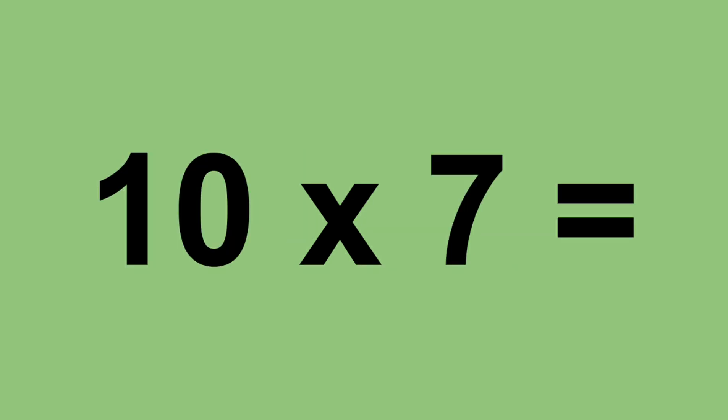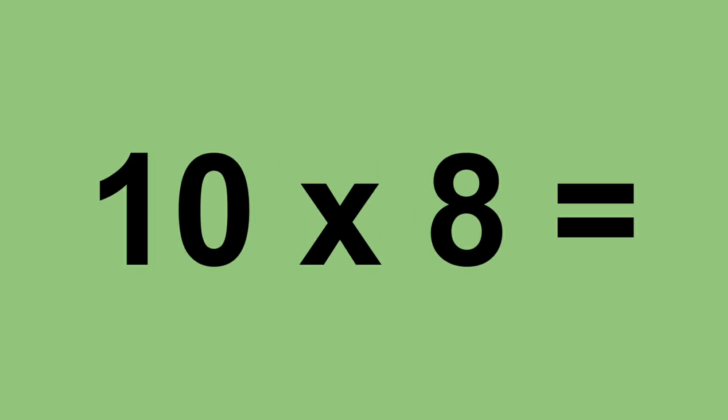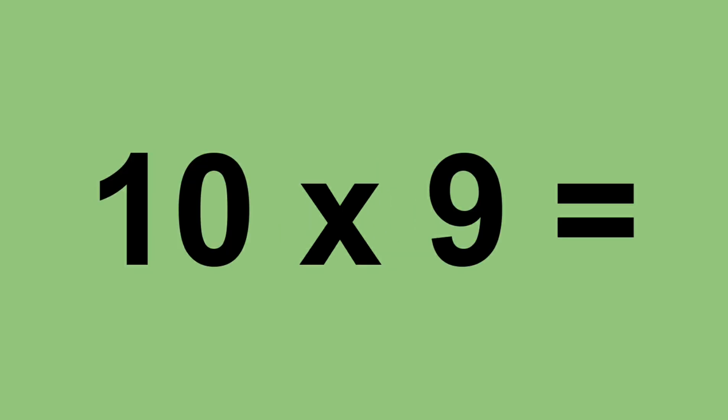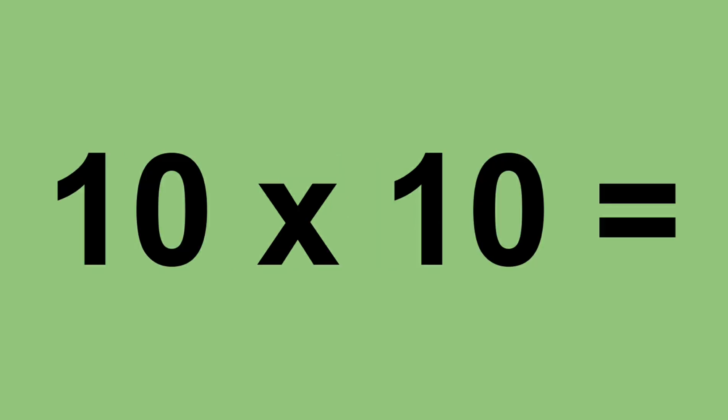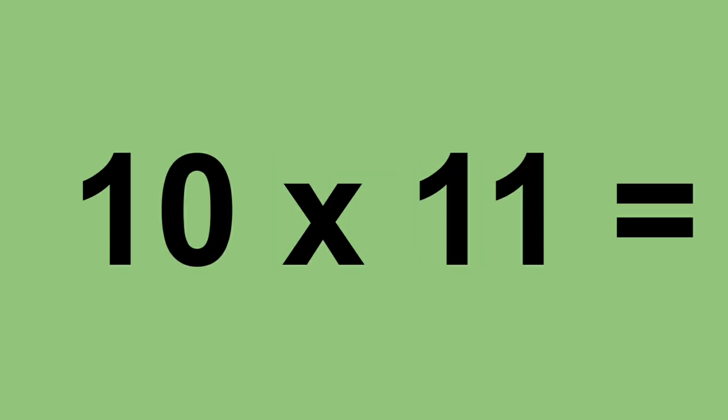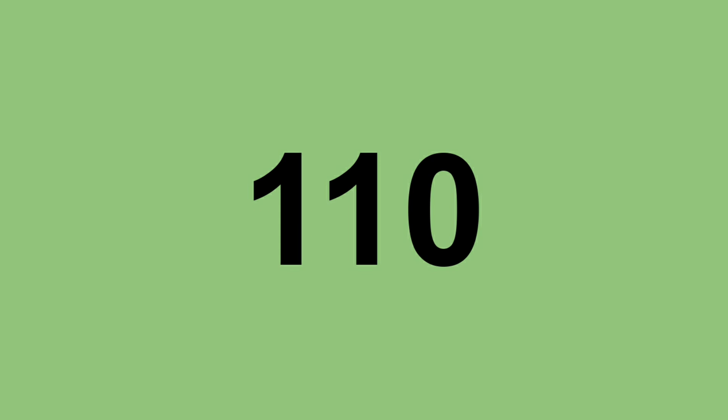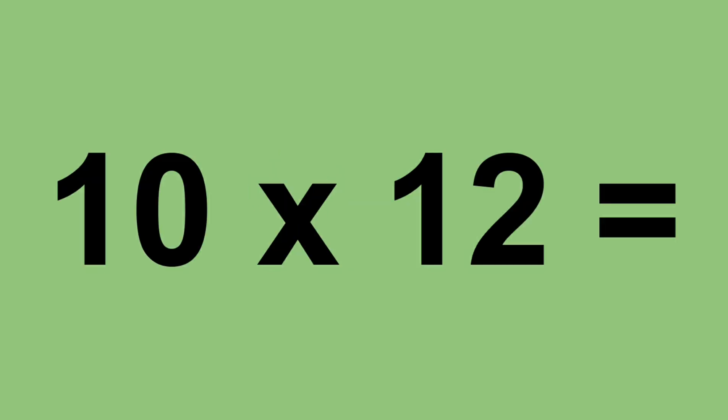Ten times seven equals seventy. Ten times eight equals eighty. Ten times nine equals ninety. Ten times ten equals one hundred. Ten times eleven equals one hundred and ten. Ten times twelve equals one hundred and twenty.